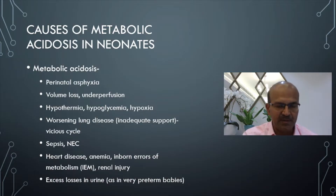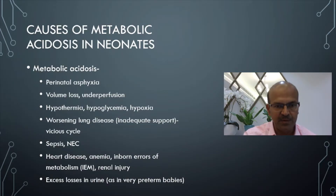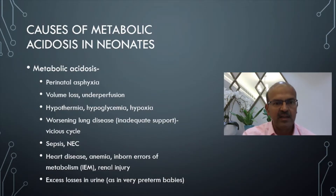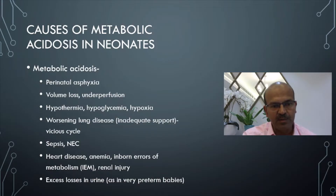Worsening lung disease with inadequate support can lead to increased work of breathing, reduced oxygen perfusion to the tissues, and lactate increase — creating a vicious cycle. It is usually mixed acidosis in severe respiratory distress. Sepsis can cause uncoupling of oxidative phosphorylation, and poor tissue perfusion can be a factor as well. The same happens in necrotizing enterocolitis, where third spacing, underperfusion, and sepsis-like manifestations contribute, along with suppressed cardiovascular function. Heart disease presents with shock, and any shock can contribute to metabolic acidosis.